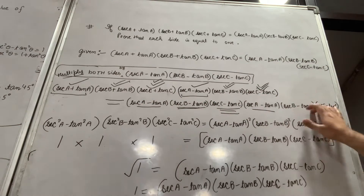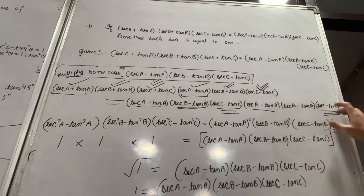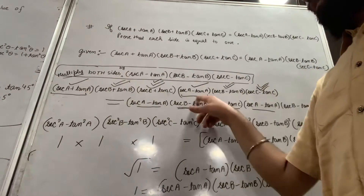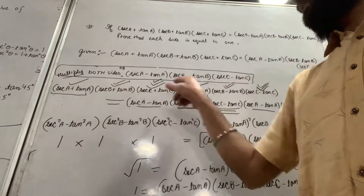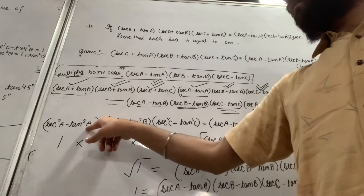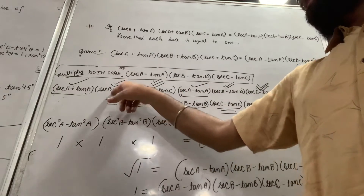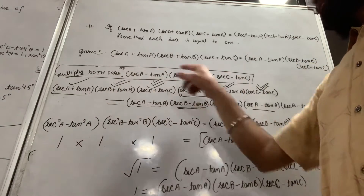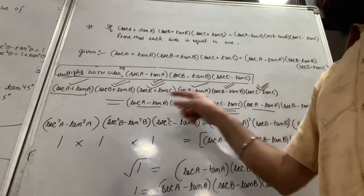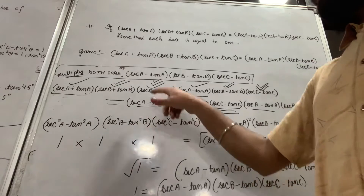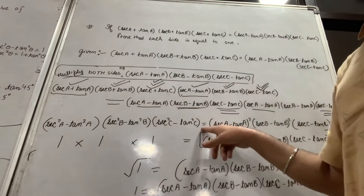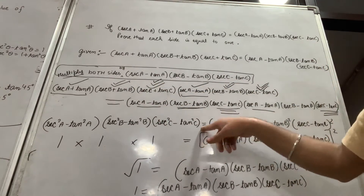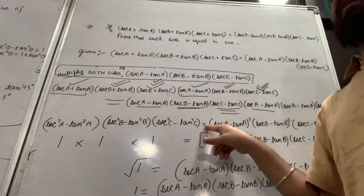So we multiply: (sec A - tan A)(sec B - tan B)(sec C - tan C) on both sides. Using the identity (a + b)(a - b) = a² - b², each pair gives sec²A - tan²A, sec²B - tan²B, and sec²C - tan²C.